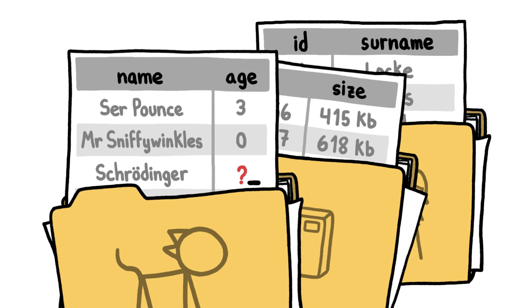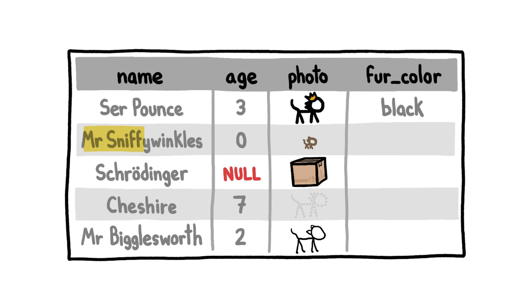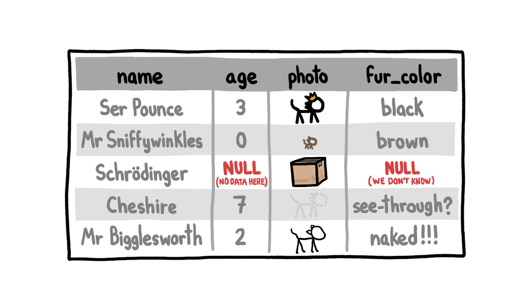So here we know that Sir Pounce has black fur, and Mr Sniffywinkles has brown fur, but we don't know about Schrodinger. Null doesn't mean no colour or no fur at all — it literally means there is no data here; we don't know what colour her fur is.